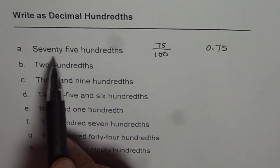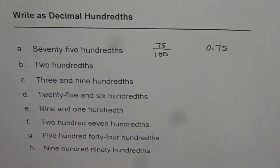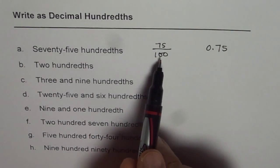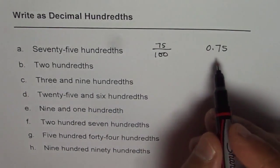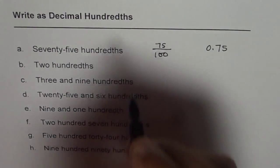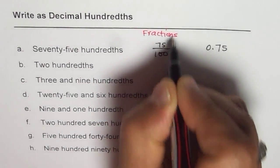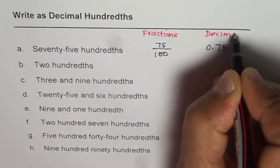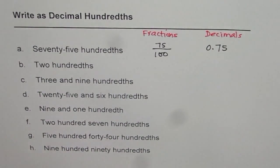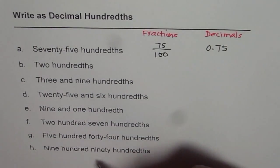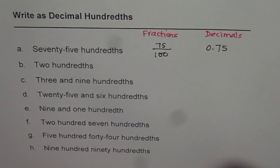So 0.75 is another way of writing 75 hundredths. When we have 75 hundredths we can imagine this as the fraction 75 over 100 and then write the equivalent decimal number. We'll first write fractions and then write decimals so that we are in a position to understand it better. We also see how to write these decimals with the help of a place value chart.